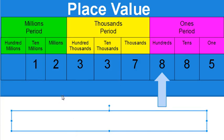We're going to look at place value all the way up to the millions — to the hundred millions. Every group of three numbers is called a period. Your ones, tens, and hundreds are in your ones period. After hundreds comes thousands: your thousands, ten thousands, and hundred thousands make up the thousands period. After that, your millions, ten millions, and hundred millions form the millions period.